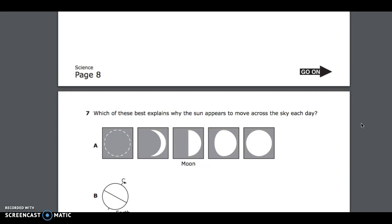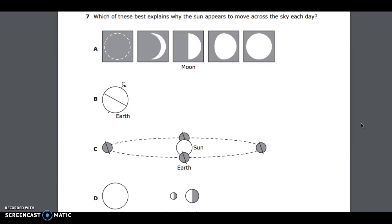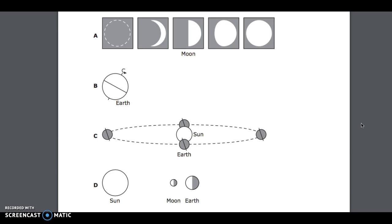Number 7. Which of these best explains why the sun appears to move across the sky each day? A, Moon; B, Earth; C, Sun Earth; D, Sun Moon Earth.